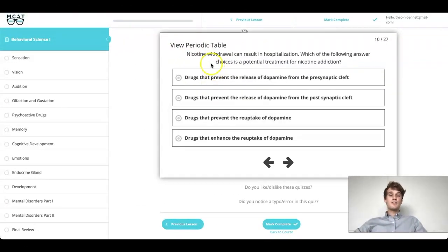To answer this question, we need to understand that we're talking about nicotine withdrawal. The withdrawal is what is causing hospitalization. And so, in order to decrease the potential for hospitalization, we need to prevent the withdrawal. So, we're looking for an answer that will actually increase levels of dopamine. A drug that will enhance the reuptake of dopamine will actually decrease dopamine that's found within the synaptic cleft. This would be a drug that would facilitate the removal by astrocytes and blood and other things like that.